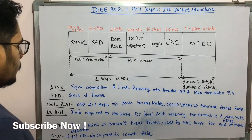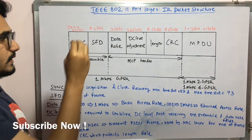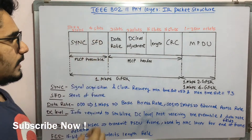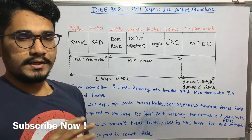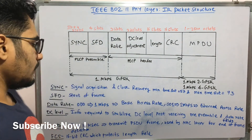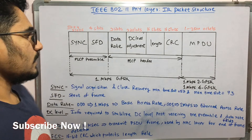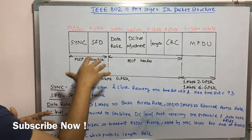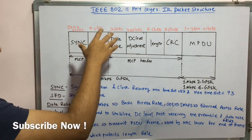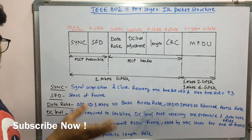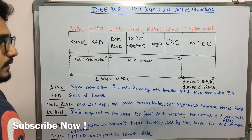Next you have the DC level adjustment. This is a current used to adjust the frequency levels in order to stabilize the PLCP preamble as well as the data rate obtained after receiving these fields.